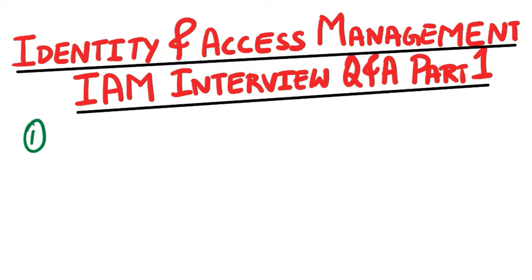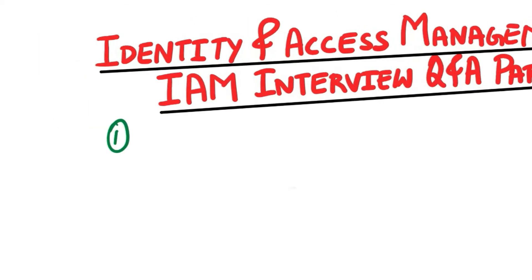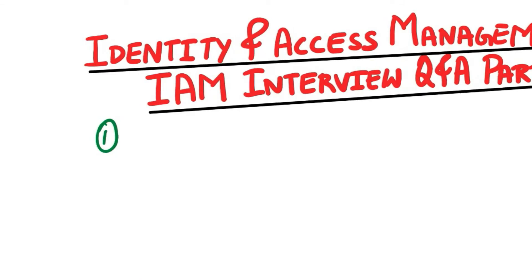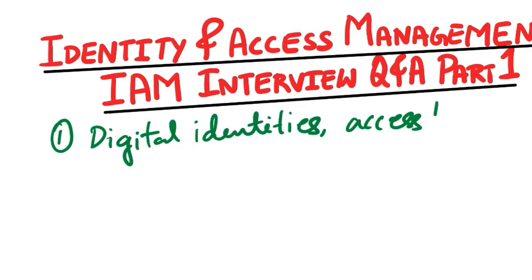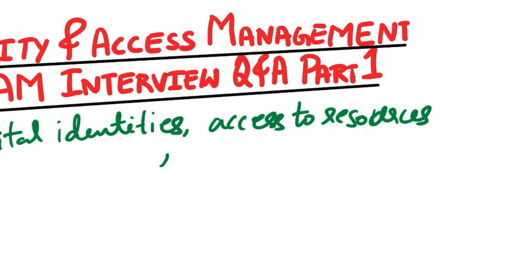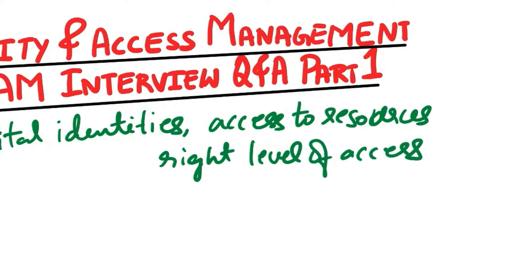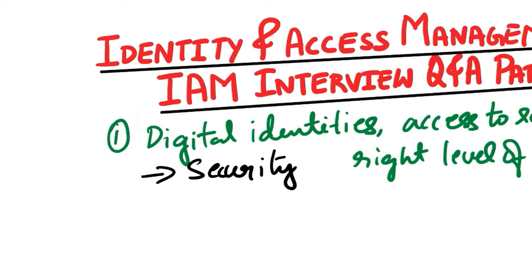Let's start with the first question: What is identity and access management, IAM, and why is it important for organizations? Identity and access management is a comprehensive framework and set of technologies that organizations use to manage and secure digital identities, control access to resources, and ensure the right people have the right level of access to the right systems and data. IAM plays a critical role in safeguarding an organization's digital assets. First, security: IAM is essential for protecting sensitive data, systems and applications, ensuring only authorized users can access specific resources, reducing the risk of data breaches and unauthorized access.